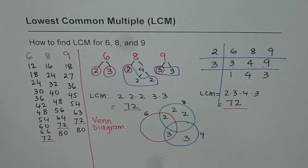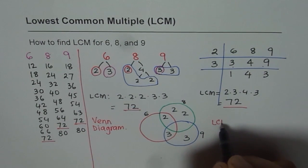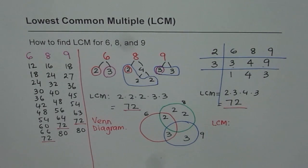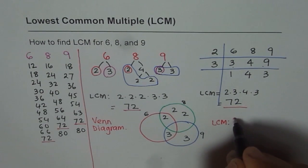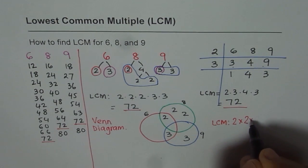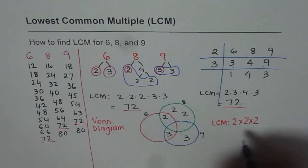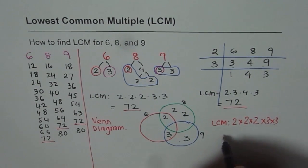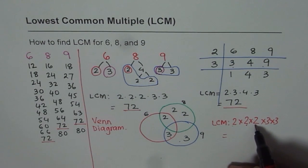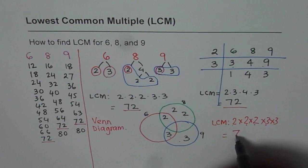Can you tell me what is the LCM using this Venn diagram? LCM is the product of all these numbers. Let's multiply them: 2 times 2 times 2 — those are three 2's — and then we have two 3's. So 2 times 2 is 4, 4 times 2 is 8, 8 times 3 is 24, and 24 times 3 is 72. So we get the same answer.